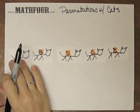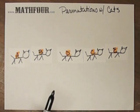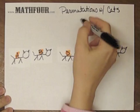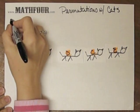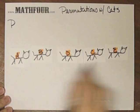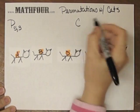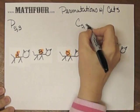In a previous video, we talked about permutations and combinations with respect to cats. I'm going to do a permutation of five cats choose three, and compare it directly to the combination of five cats choose three.